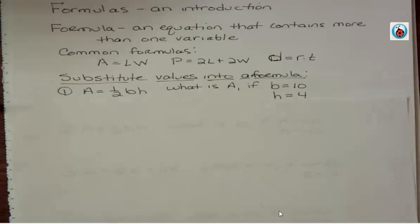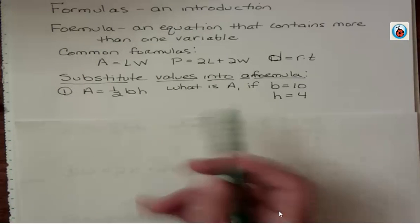In the first case, we're taking a formula and substituting values into it. We have A = 1/2 bh, the area of a triangle. We're asking: what is A if b = 10 and h = 4? This is just a substitution problem.